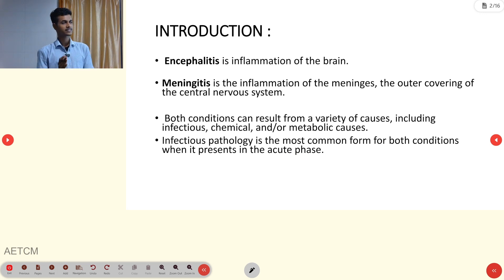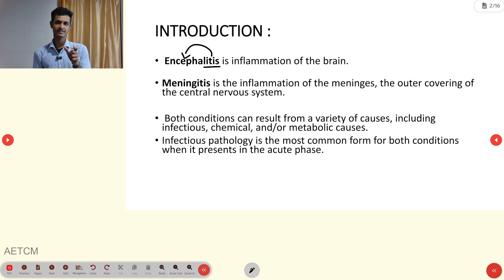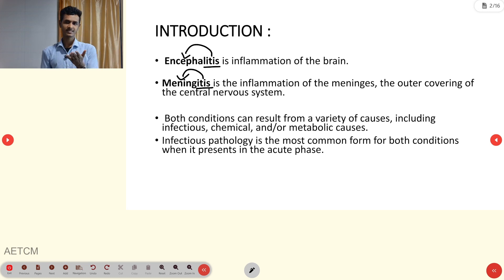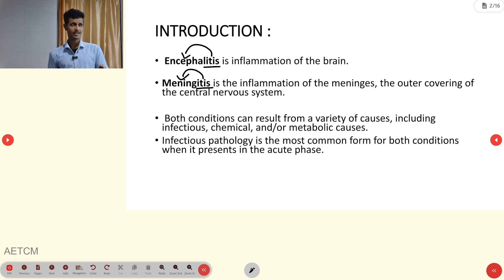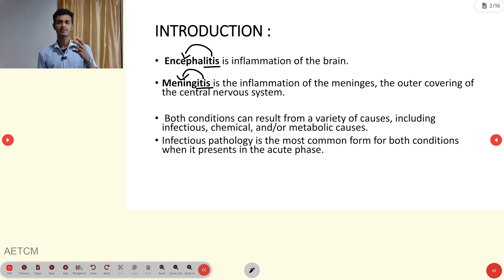First, an introduction. What is meant by encephalitis? 'Itis' means inflammation, so encephalitis means inflammation of the brain. Meningitis means inflammation of the meninges — the outer covering of our brain, spinal cord, and central nervous system.